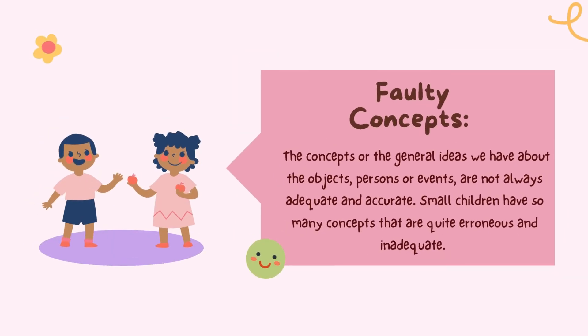The last type is faulty concepts. The concepts or general ideas we have about objects, persons, or events are not always adequate and accurate. Small children have many concepts that are quite erroneous. For example, one's anxiety over a cat crossing one's path, or feelings of hatred towards a person belonging to a different place or religion, are results of faulty concepts. Faulty concepts should not be allowed to develop in children.